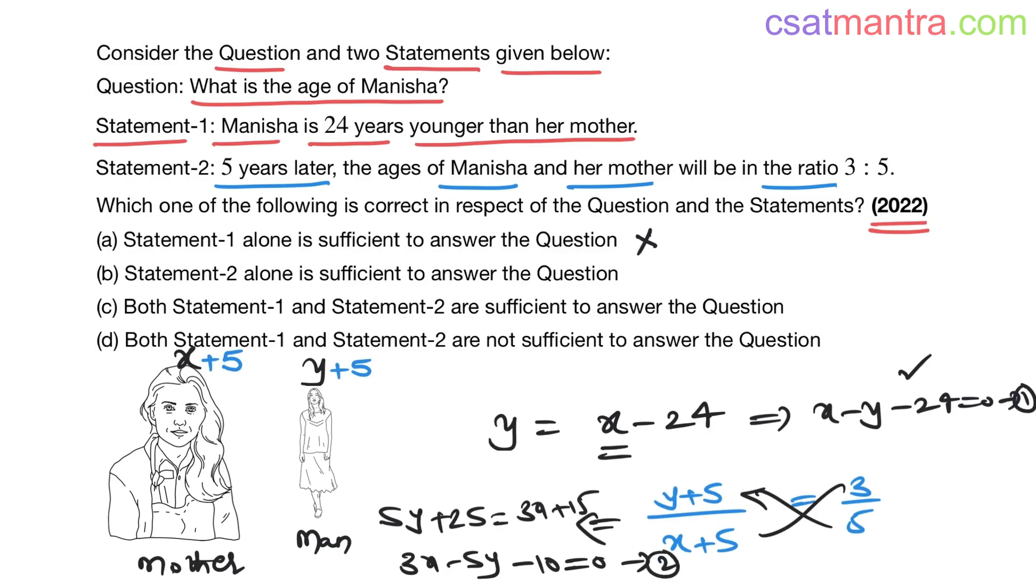This equation alone doesn't give anything about Manisha's age, so this is also not sufficient. Now let's combine these two equations.